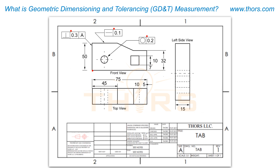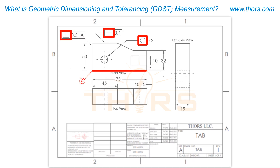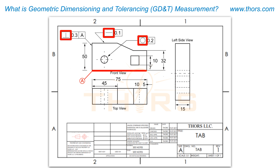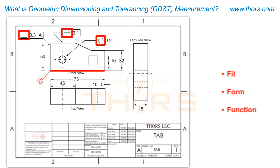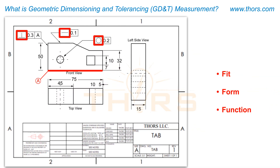GD&T is a language of symbols used on engineering drawings to convey design intent so that the product meets the necessary fit, form, and function requirements.